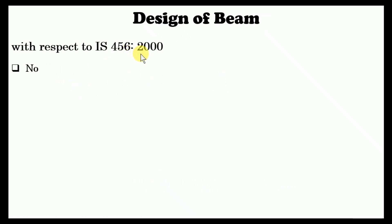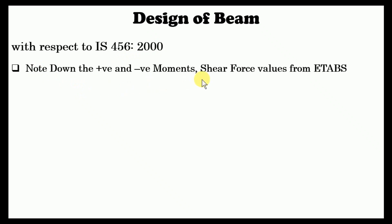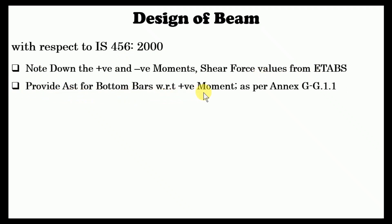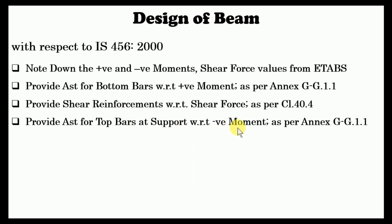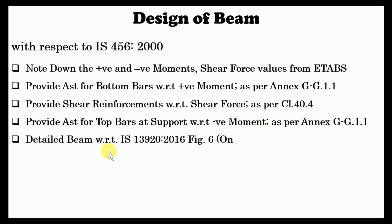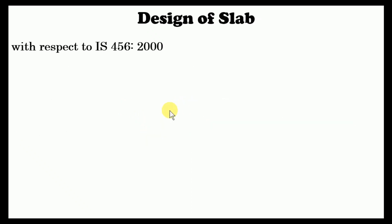For design of beams, following IS 456-2000, first note positive and negative bending moments and shear forces from ETABS. Provide area of steel for bottom bars with respect to positive bending moment as per Annex G formula. Provide shear reinforcements for shear force as per clause 40.4. Then provide area of steel for top bars at supports with respect to negative bending moment using the Annex G formula. At the end, detail the beam. For SMRF, provide ductile detailing as per IS 13920-2016 Figure 6.